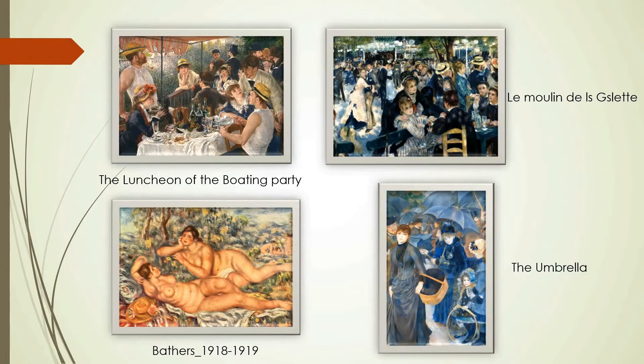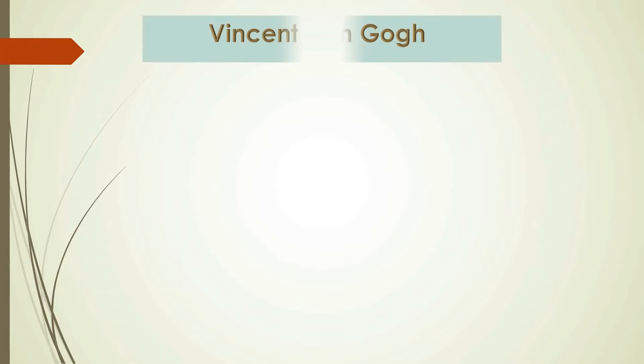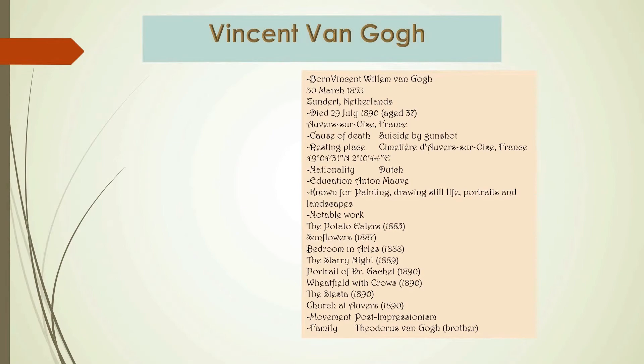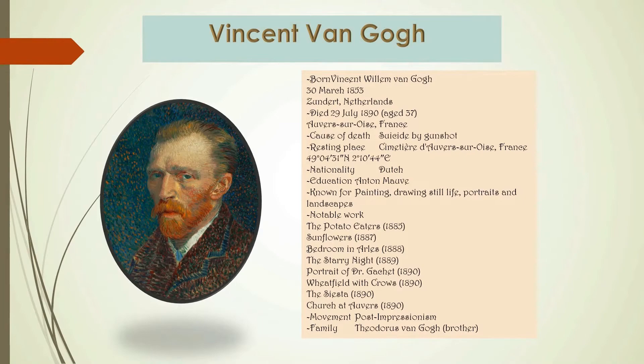Vincent Van Gogh is another important 19th century artist. Vincent Willem Van Gogh was a Dutch Post-Impressionist painter who posthumously became one of the most famous and influential figures in Western art history. In a decade, he created about 2,100 artworks, including around 860 oil paintings, most of which date from the last two years of his life, including landscapes, still lifes, portraits, and self-portraits.